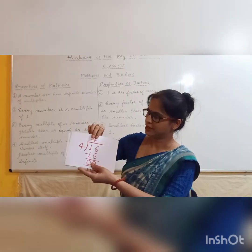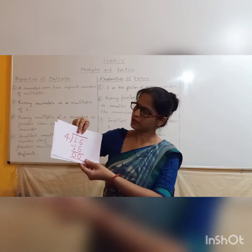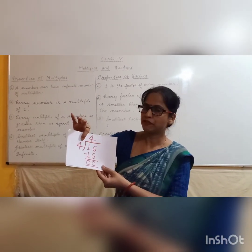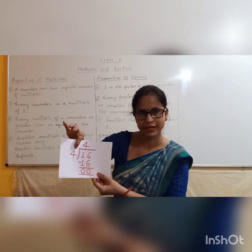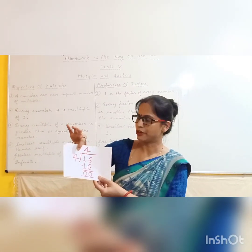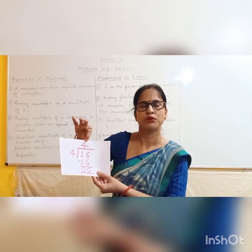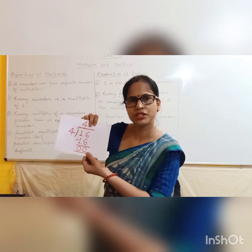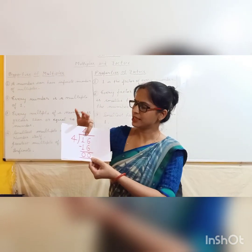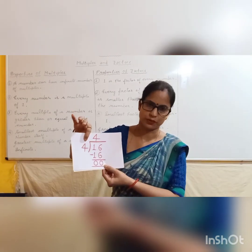See another example. Here, 16 is the dividend and 4 is the divisor. By dividing 16 by 4, we get the quotient 4 and remainder 0. So we can say 16 is divisible by 4.